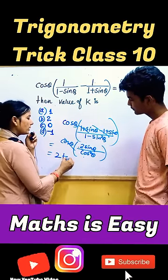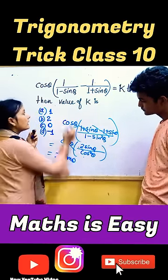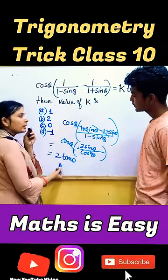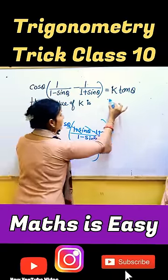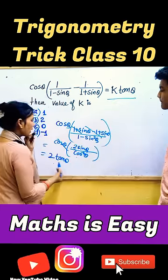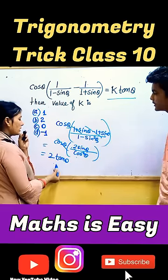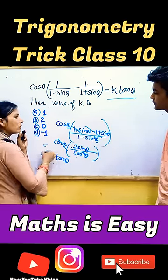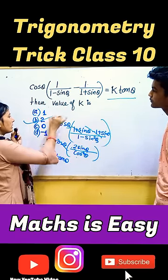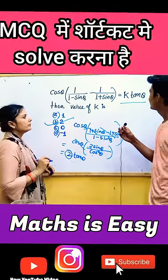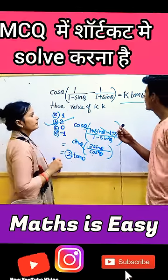Which is 2 tan theta. How much value we got? 2 tan theta. This expression is k tan theta. 2 is the correct answer. That means we have to solve it in MCQ.